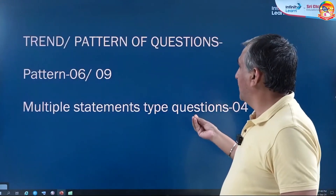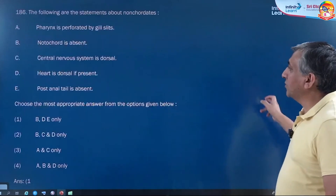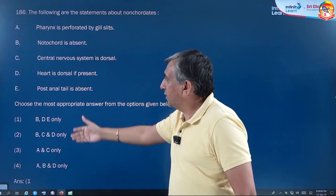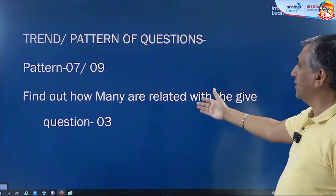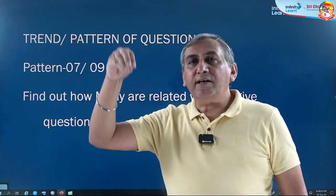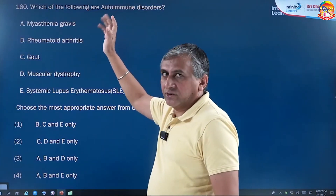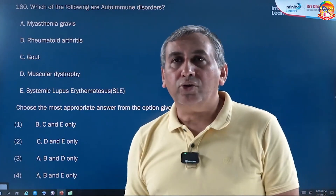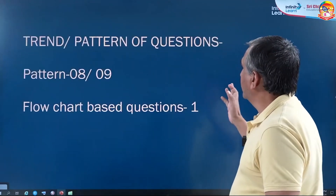The next type of question is the multiple-statement type. This is a new pattern in NEET exam that started from 2024, and their weightage is also good. They give you multiple statements and ask how many are correct and how many are incorrect. Another sub-type is how many statements are related to a given topic. For example, they may ask what are the autoimmune disorders — you have to learn them to answer correctly.